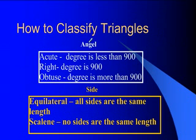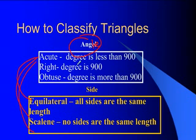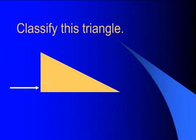We can classify triangles by both their angles and their sides together. So a triangle can be acute equilateral, acute scalene, or acute isosceles. It could also be right equilateral or obtuse scalene. We use both the angle classification and the side classification to fully describe our triangles.